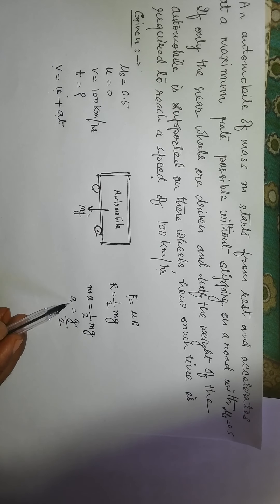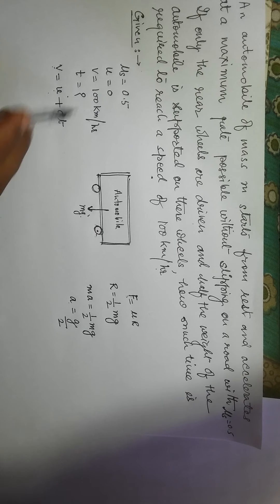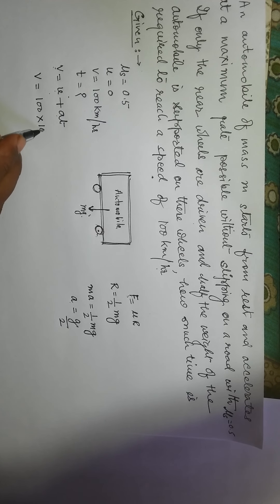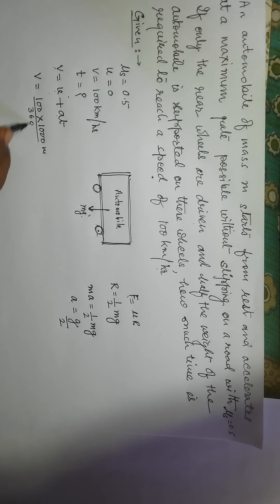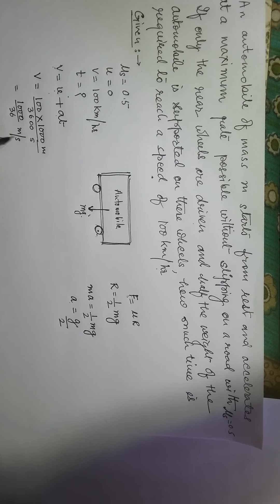We have the value of a equal to g by 2. Now we convert v from 100 kilometers per hour into meters per second: 100 km/h equals 100 times 1000 meters divided by 3600 seconds, which gives us 1000 upon 36 meters per second.